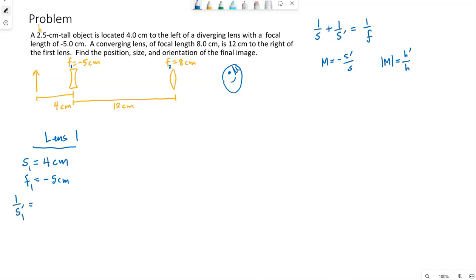So the image created just by lens 1 is negative 2.2222 and so forth. These are in centimeters because I left both f and s in centimeters. So that gives me s prime in centimeters.